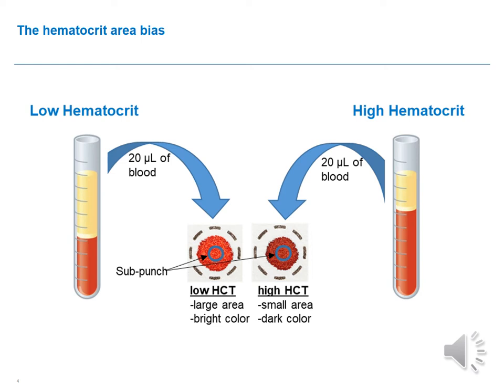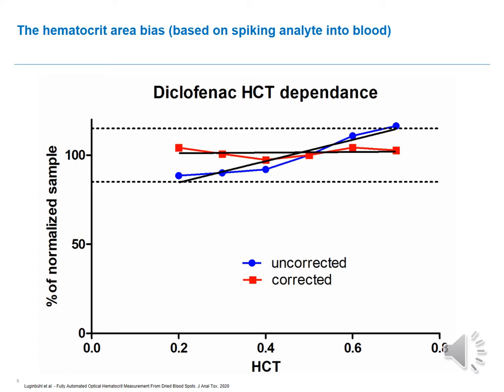When performing DBS sub-punching, which is the most typical form of DBS analysis, this results in an area bias due to the difference in spreading area. Typically, the hematocrit area bias is not very significant as long as the analyte itself is distributed equally within the red blood cell fraction and the plasma fraction of the blood. The real case sample here represents that well — the uncorrected result remains within about plus or minus 15% measurement uncertainty.